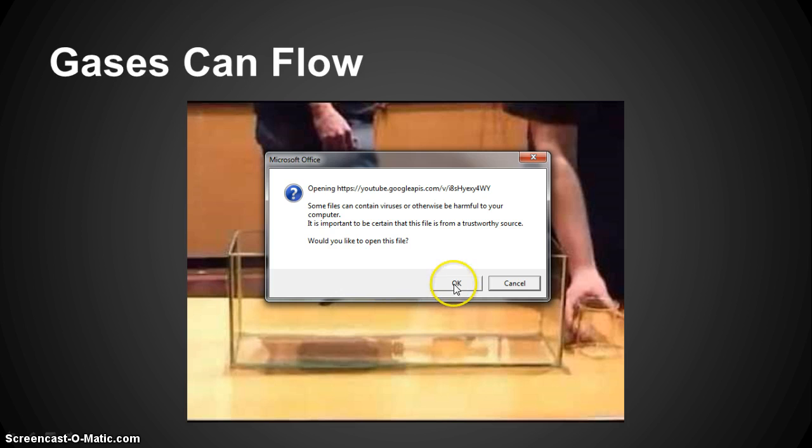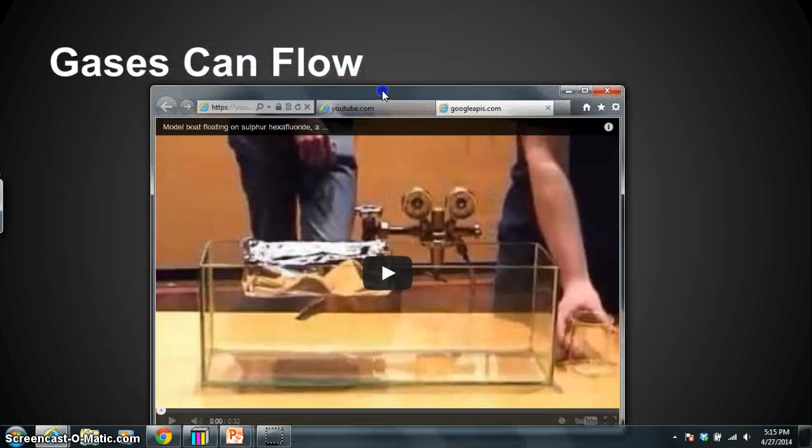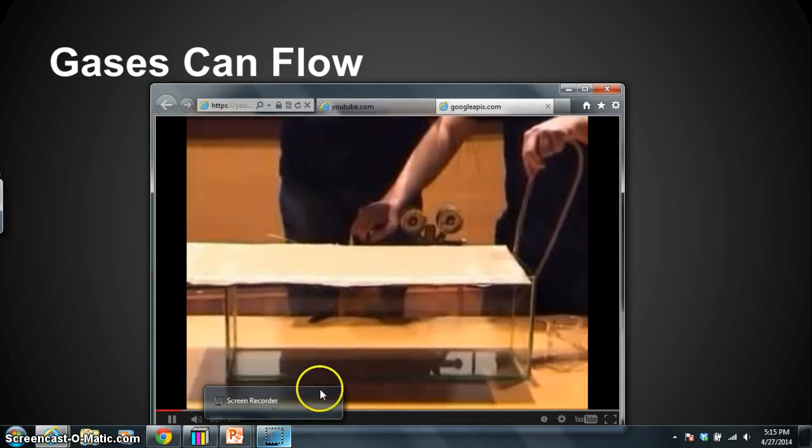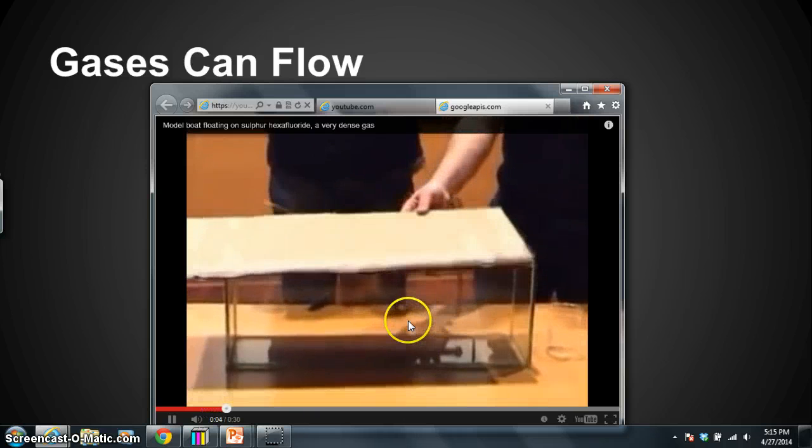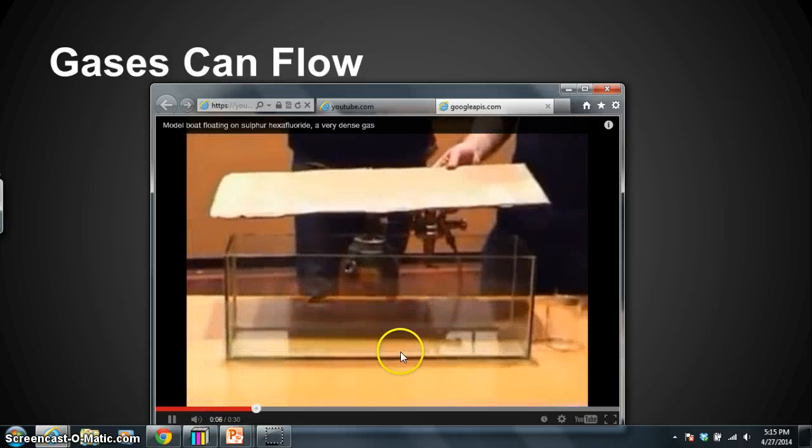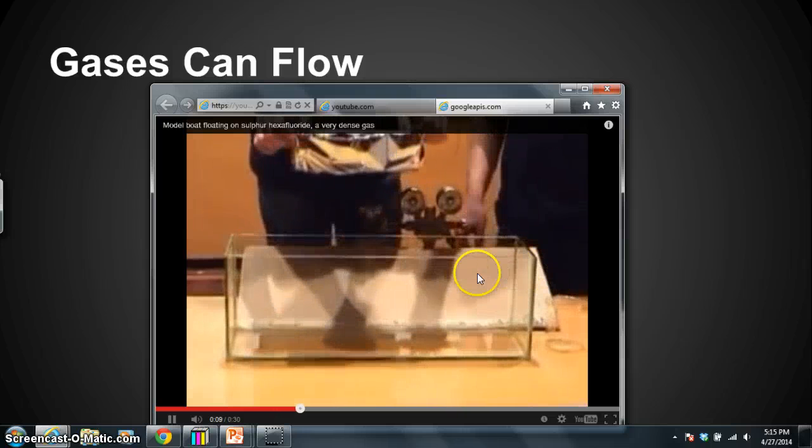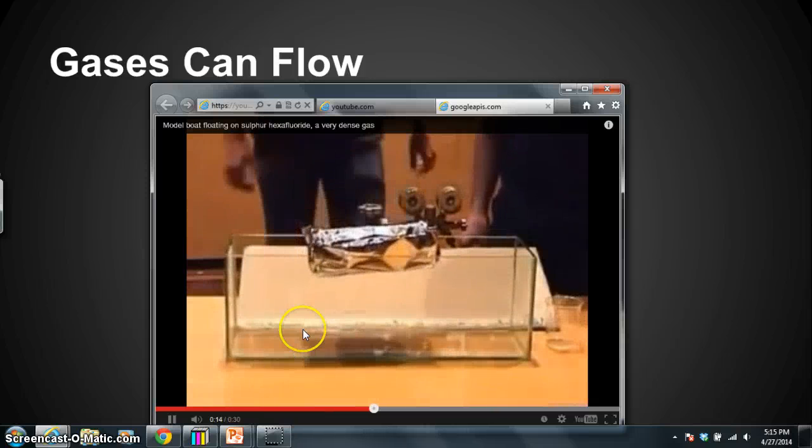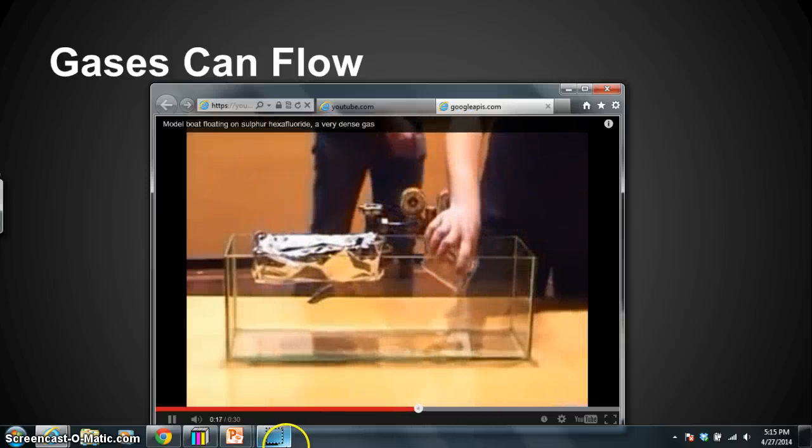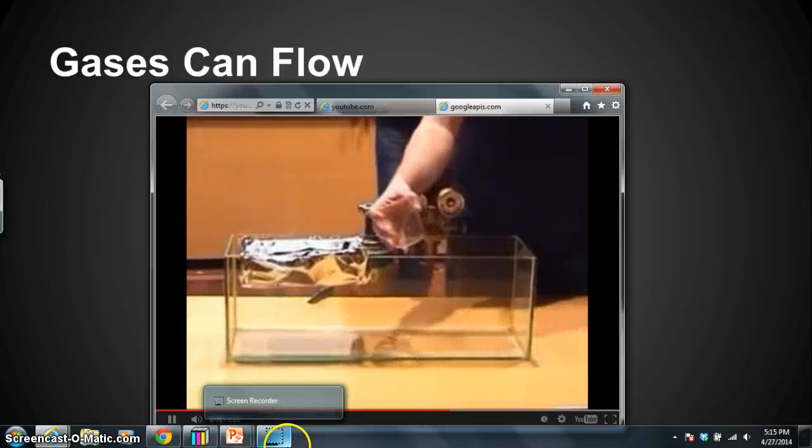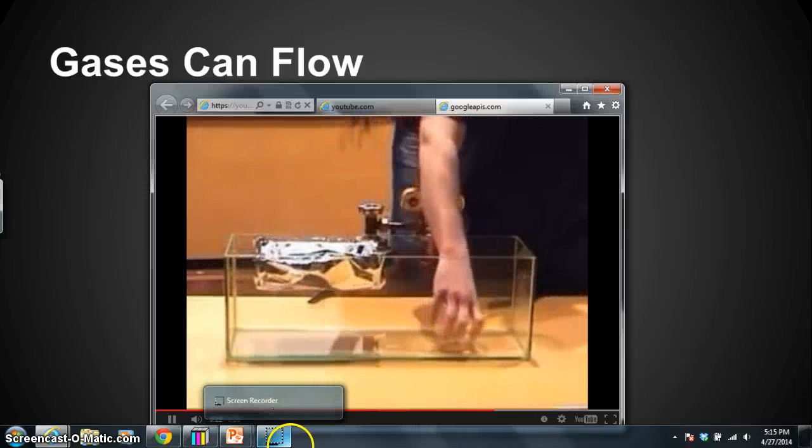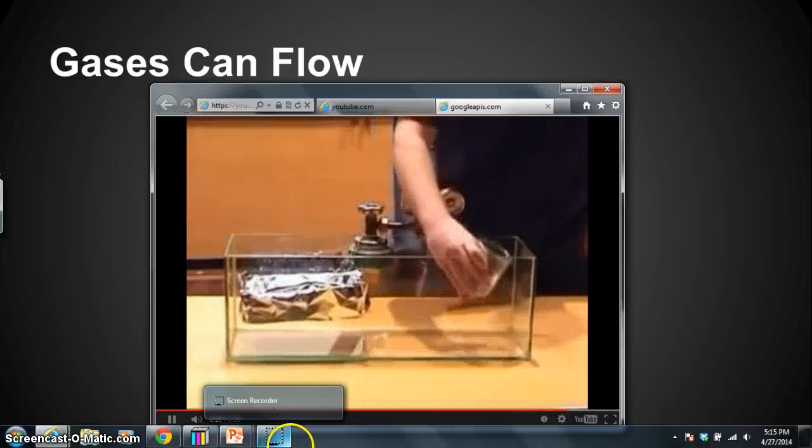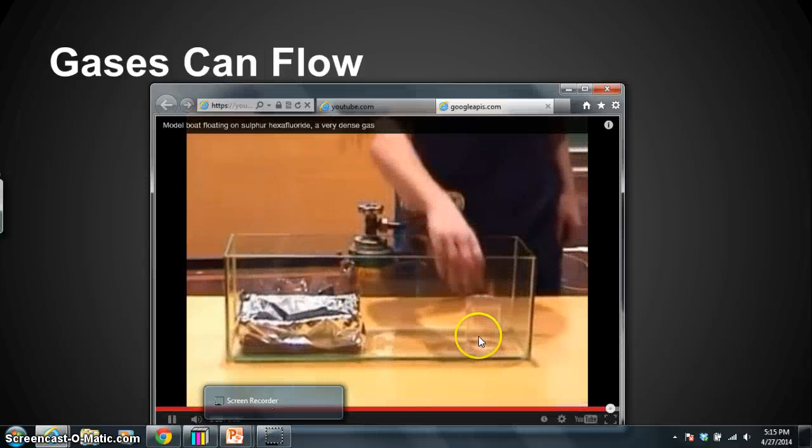I'm not sure why that video didn't load yet. Let's try it again. There we go. So here we go. This is an example of gases flowing. They're filling up this aquarium with a gas called sulfur hexafluoride, which is more dense than air, and so the gas is going to sit in the aquarium and not escape. And now this aluminum foil boat can be floating on that gas. But here's where you get to see it pour. They're picking up the gas and pouring it from the beaker into the boat, and you can see that gases do flow.